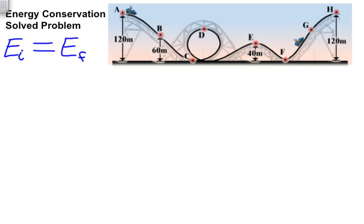So for example, if we want to know the speed at point e, we can use energy conservation.